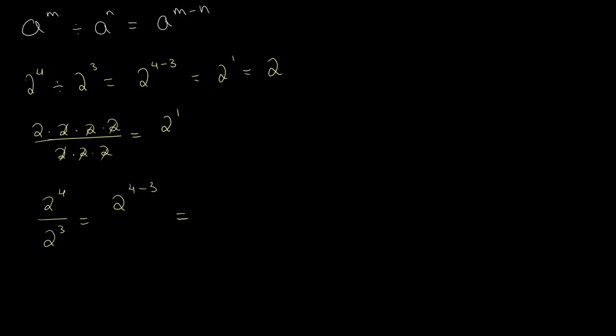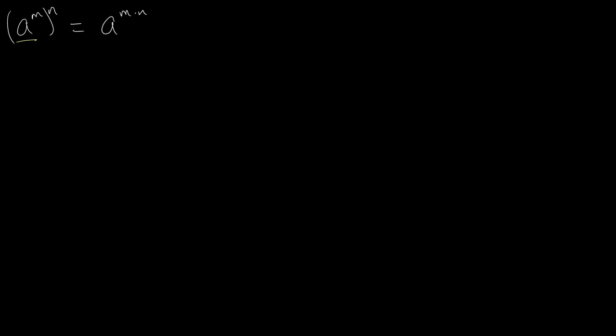The third rule of indices is the power rule, which states that a to the power of m, whole to the power of n, is equal to a to the power of m times n. This is the first time we're seeing multiplication happening inside of the power. For example, two to the power of four, to the power of three, is equal to two to the power of four times three, which equals two to the power of twelve. This law is also pretty intuitive if you try to open it up.